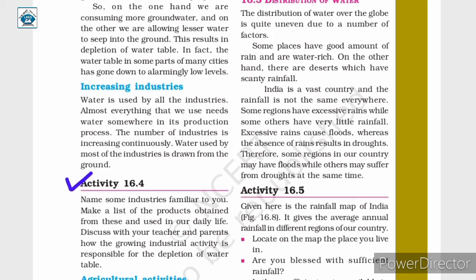Activity 16.4 asks you to name some industries familiar to you and make a list of the products obtained from these that are used in daily life. You then need to discuss with your teacher and parents how growing industrial activity is responsible for the depletion of the water table.